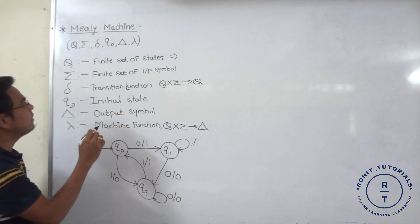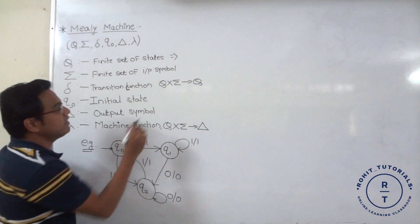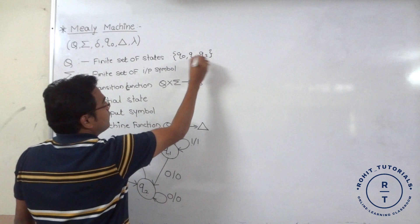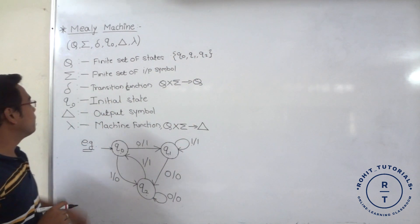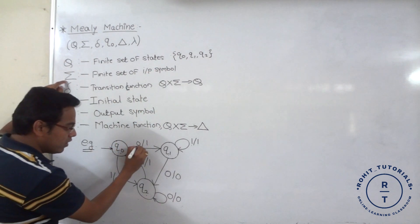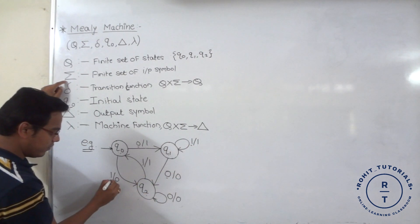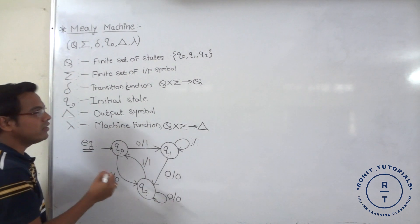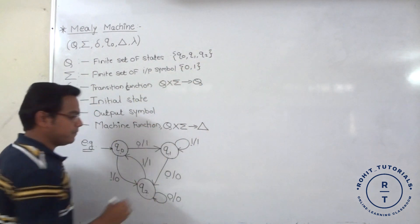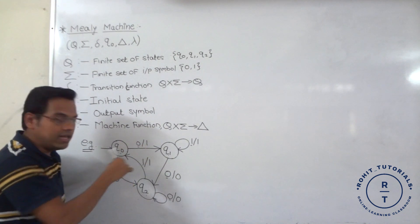Mille machine is also represented with the help of six tuples. Capital Q is the finite set of states — there are three states available: Q0, Q1, Q2. Next is summation, finite set of input symbols. The input symbols present are 0 and 1, taking unique values. So finite set of input symbol is either 0 or 1, because before the slash we consider it as an input symbol in mille machine.